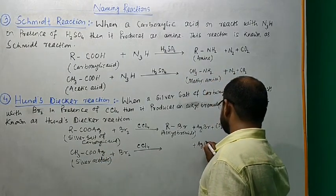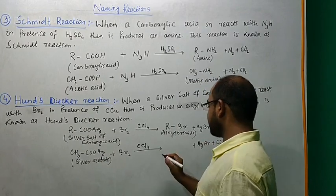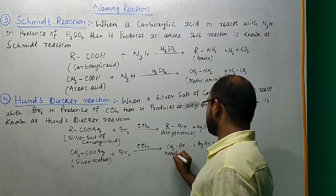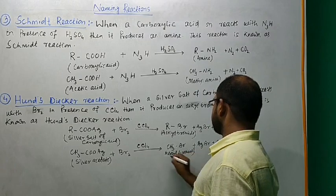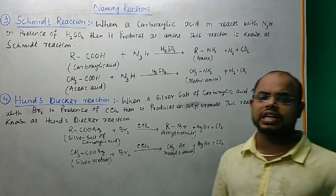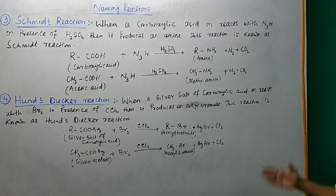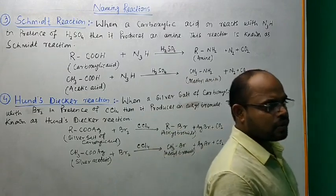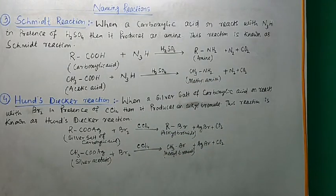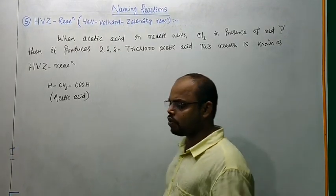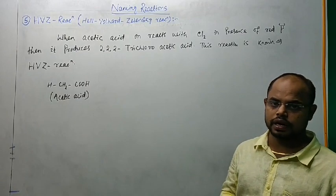When silver salt of carboxylic acid reacts with bromine in the presence of carbon tetrachloride, then it produces alkyl bromide. This reaction is known as Hunsdiecker reaction.